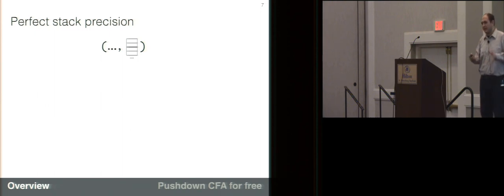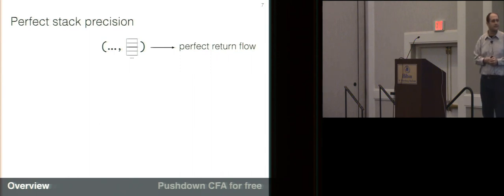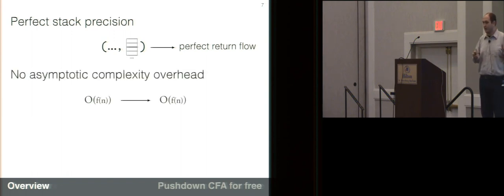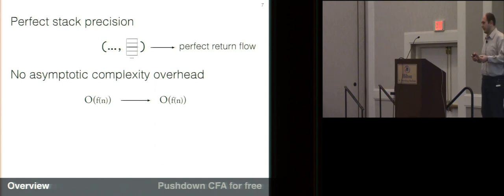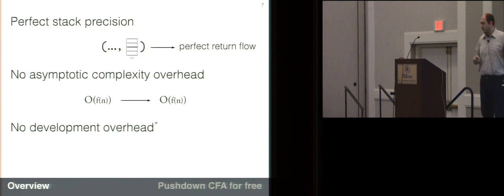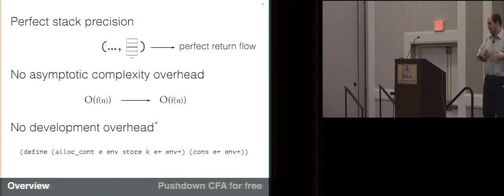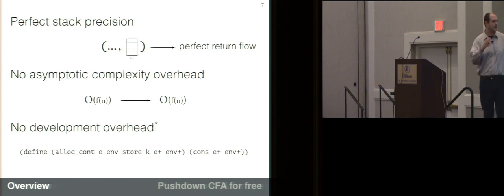So what does perfect stack precision get you? Basically, it gets you a guarantee of perfect return flows, even in a higher-order setting. Our technique is also free in two distinct senses. First, it exhibits no asymptotic complexity overhead — if your underlying analysis is in a specific complexity class, after applying our technique you'll have an analysis in the same complexity class. Second, for analysis frameworks which use the approach of store-allocating continuations, there is no development overhead. There will be a trivial change required in the code, but it won't be a systemic change impacting the design of the analysis or code maintainability.